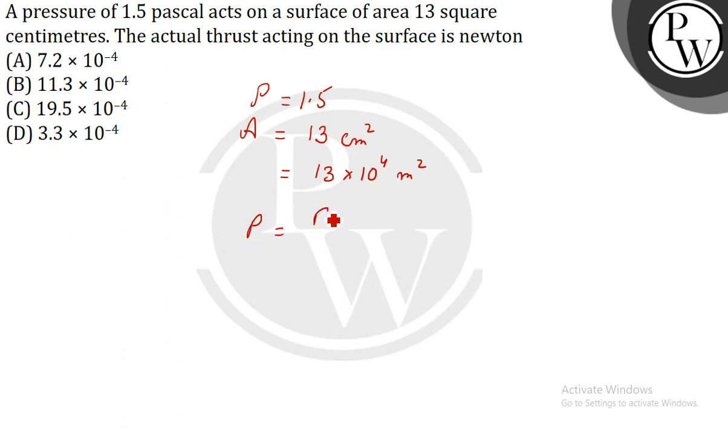We know that pressure equals to force per unit area. So, pressure is 1.5 is equal to force by area.